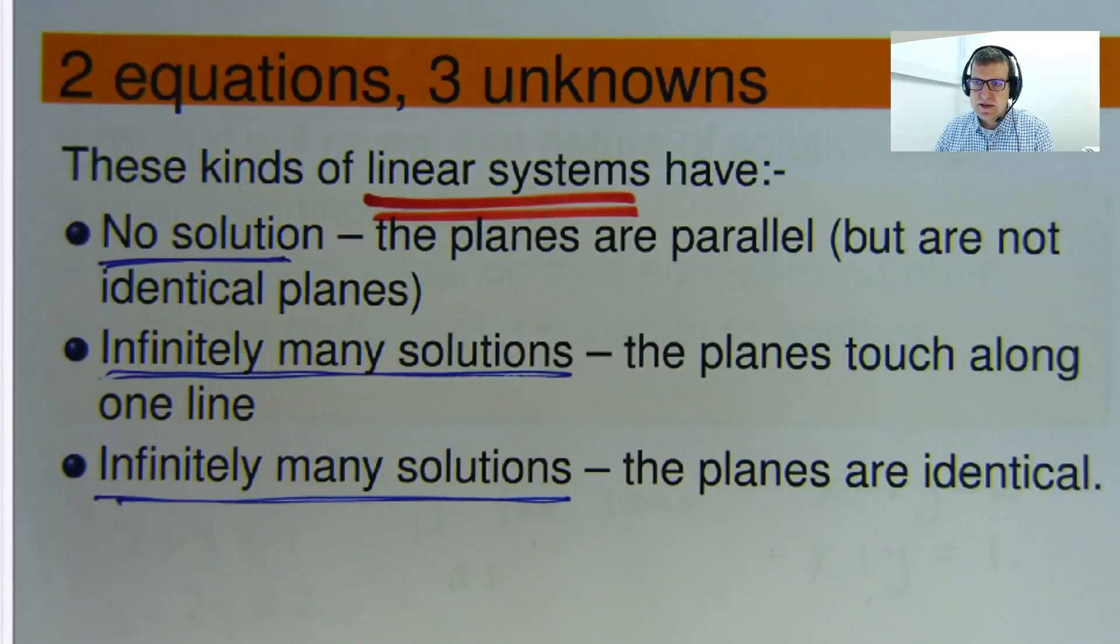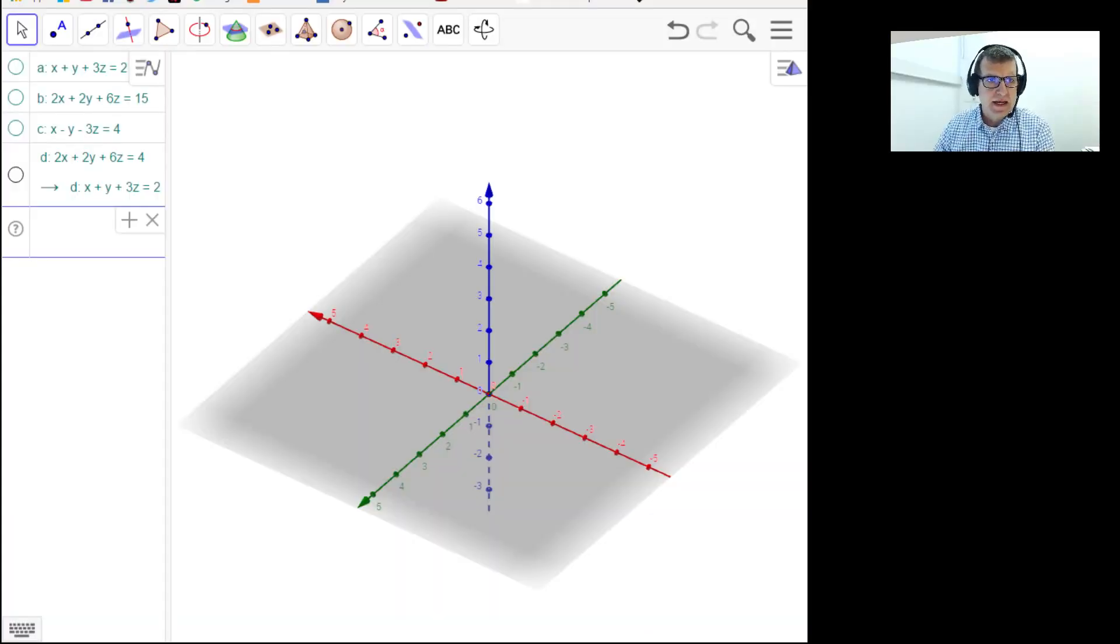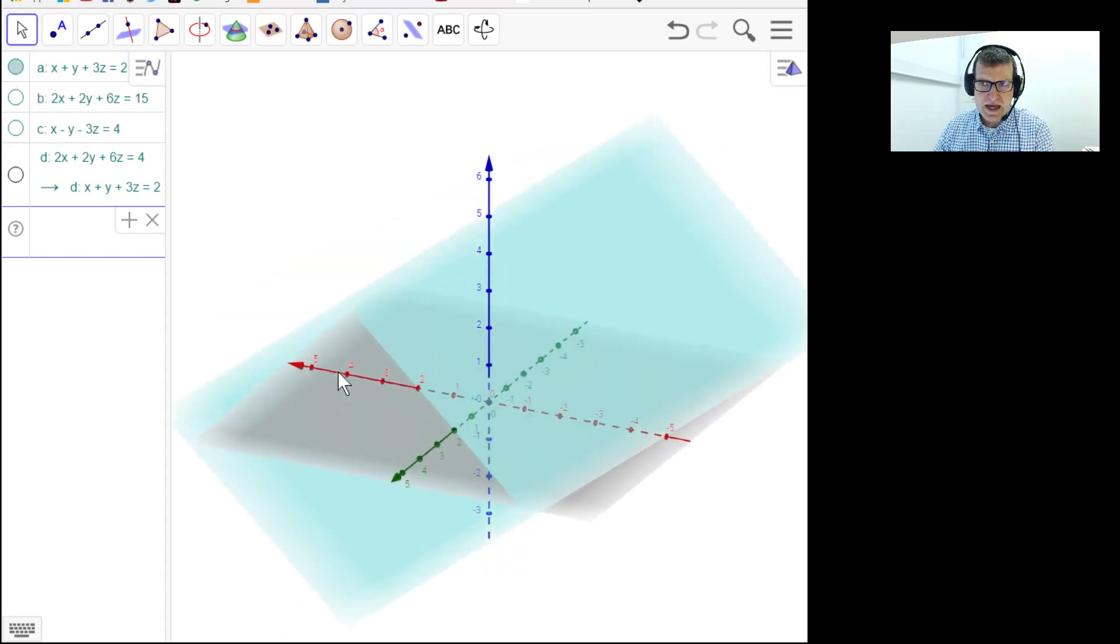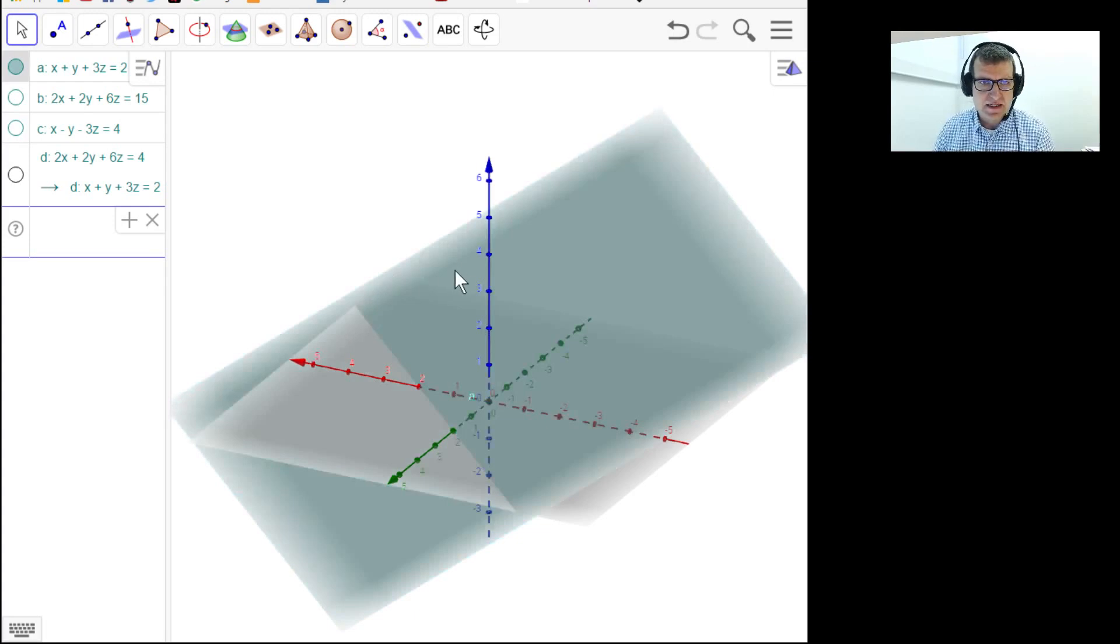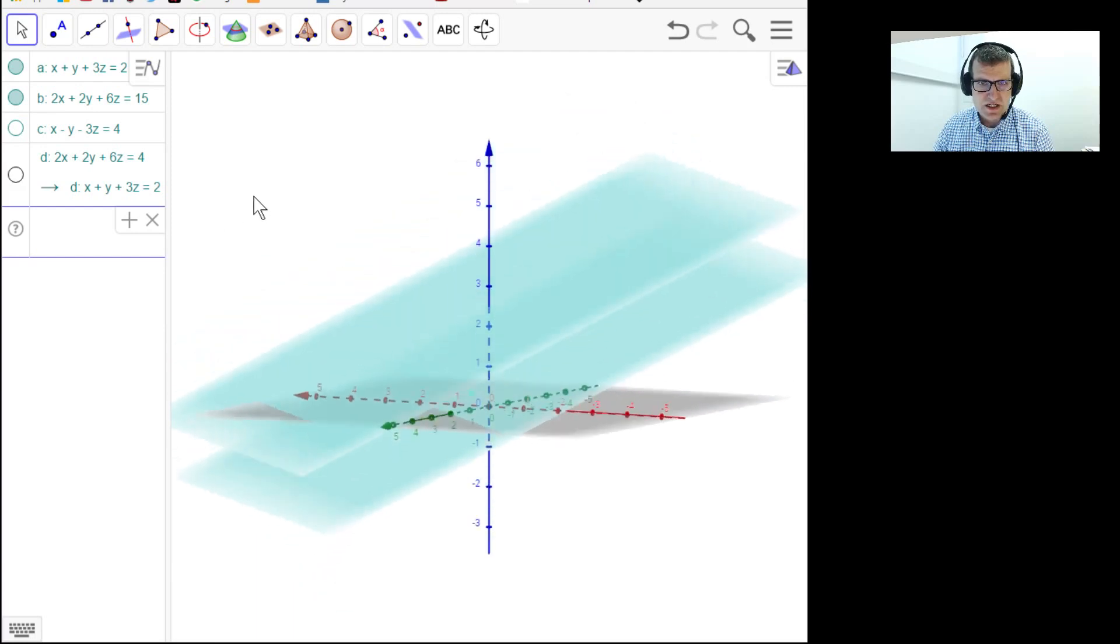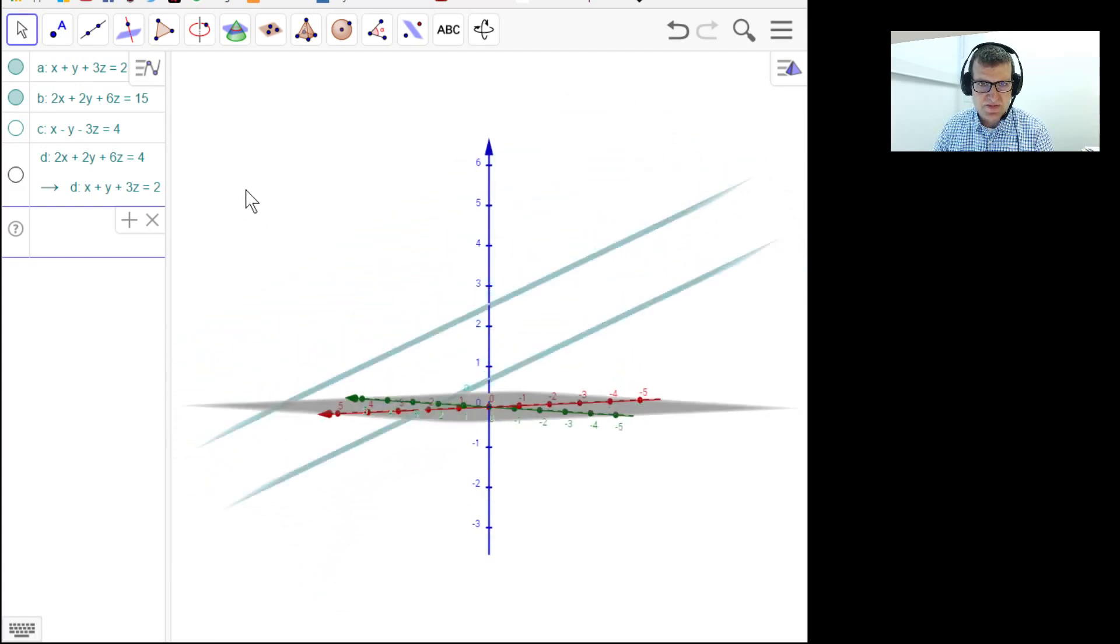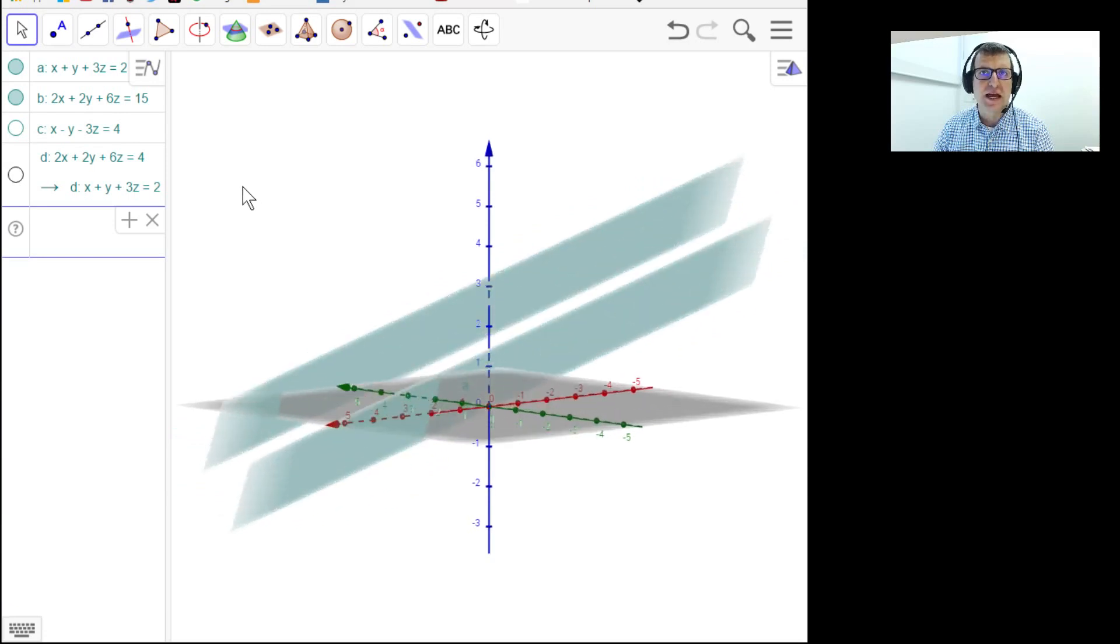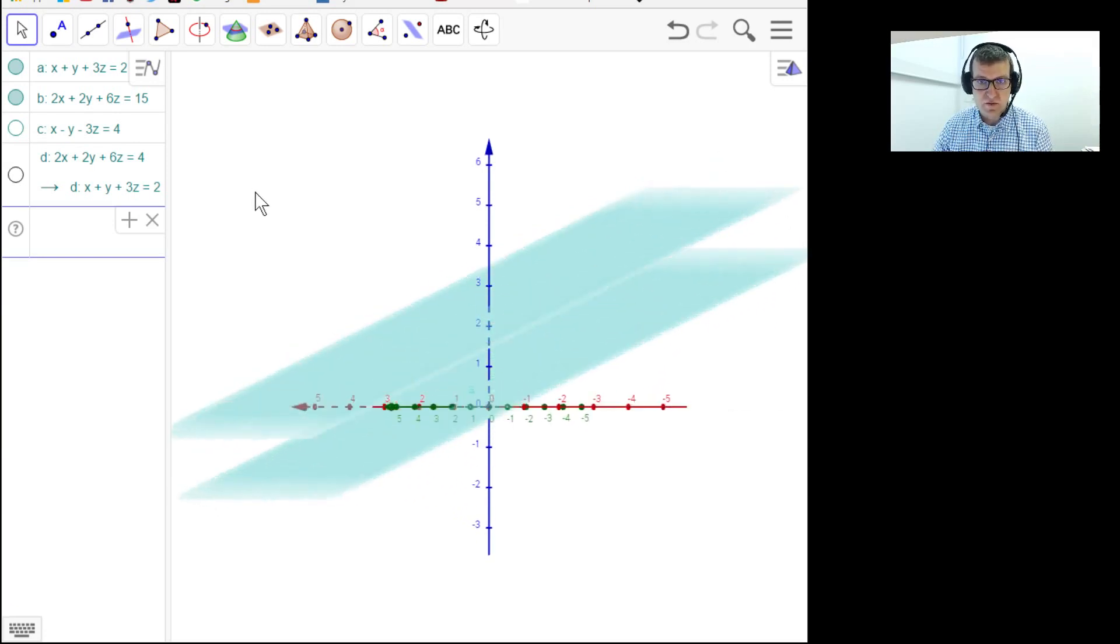So, let me bring in GeoGebra. And so you can see here, the grey is just the XY plane. The blue axis is the Z axis. You can see here that this is the plane up here. And if I put in this plane, as well, and I shift it around a bit, you can see those two planes never touch. They're parallel planes. So this would be a situation where there is no solution.